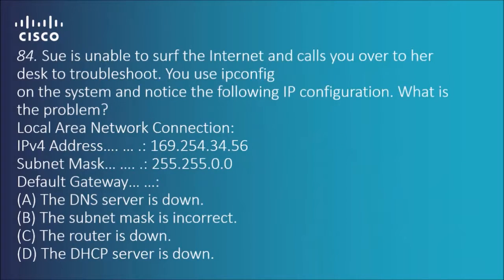We'll move into the first one. Sue is unable to surf the internet and calls you over to her desk to troubleshoot. We use ipconfig on the system and notice the following IP configuration — what is the problem? We've got a LAN which is IPv4, an address, a subnet mask, and weirdly enough nothing in the default gateway.